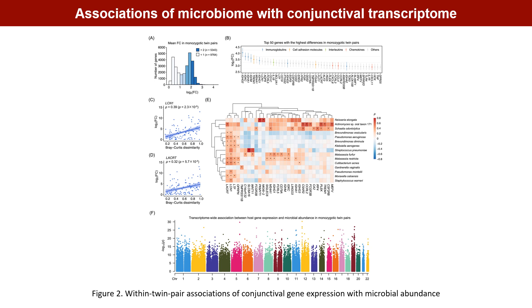We then examined the associations between conjunctival gene expression and microbial abundance in monozygotic twins, controlling for the influence of host genetic variation. We measured the environmental effect on gene expression phenotype as the fold change between twin pairs. We found that the beta diversity of the conjunctival microbiota was positively correlated with the fold change of LCN1 and LACRT. Genes encoding immunoglobulins, which showed the greatest within-twin variation in expression, were positively correlated with Malassezia species. We also performed within-twin pair analysis of transcriptome-wide association between conjunctival gene expression and microbial abundance, identifying a total of 241,073 significant associations.